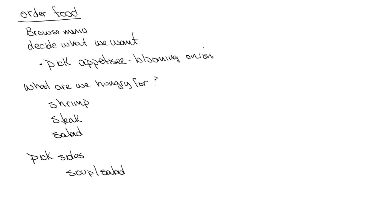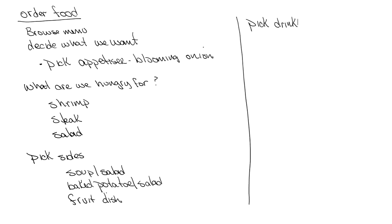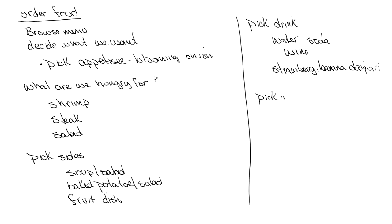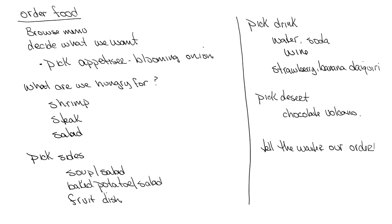If we chose steak, maybe we'll have a baked potato and salad. If we're being healthy with a cobb salad, maybe a side of fruit salad. Then we decide what to drink — water, soda, wine, or maybe a virgin strawberry banana daiquiri. The last step is to pick a dessert, perhaps a chocolate volcano. And finally, the last part of ordering food is to actually tell the waiter our preferences. Now that we've brainstormed the steps, the next thing is to create an activity diagram.